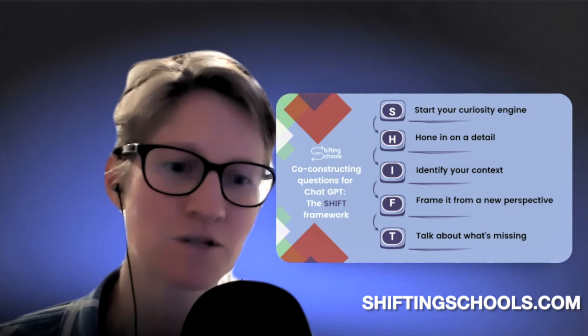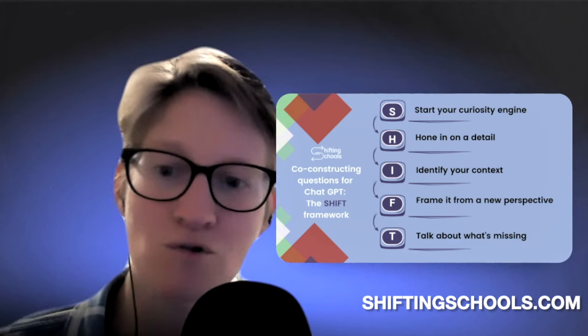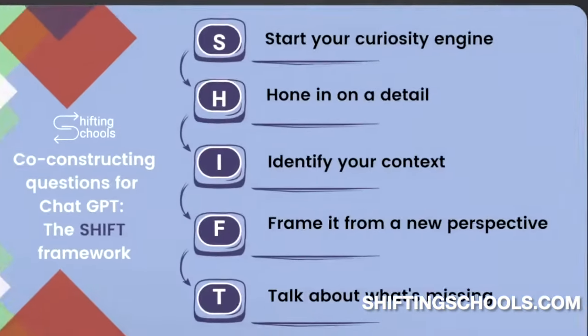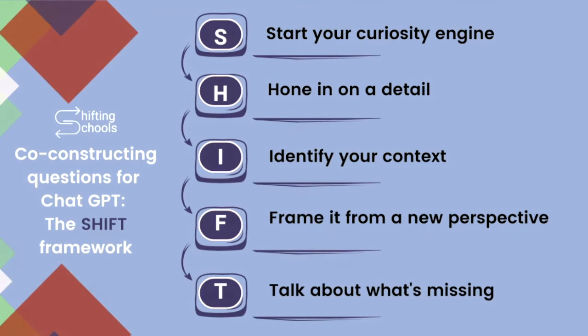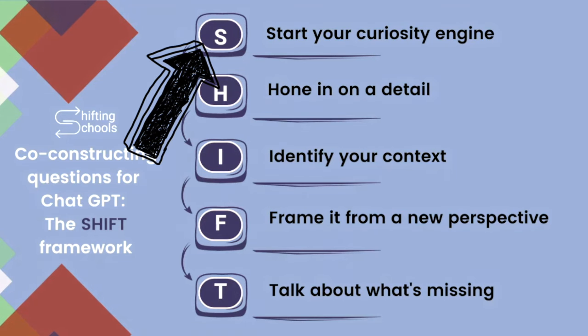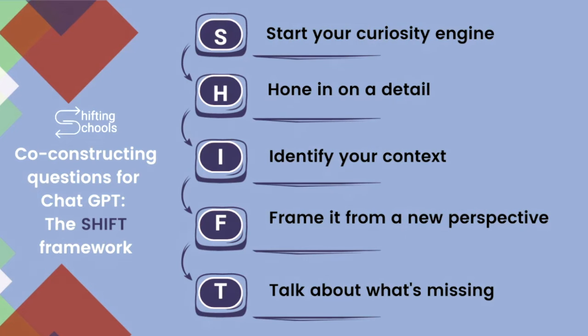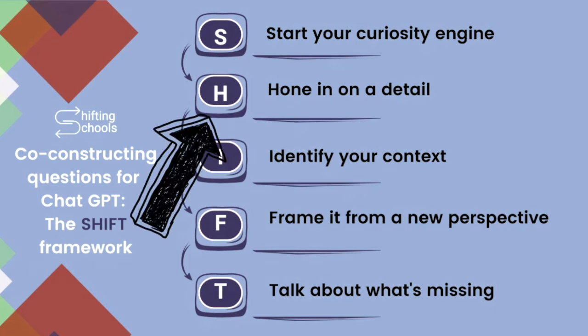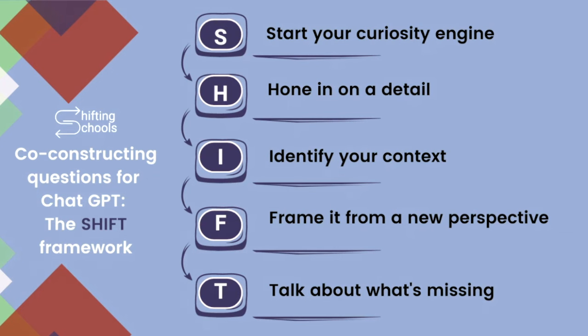We're going to model this process for you and take you through our Shift Framework. The Shift Framework essentially asks a learning community to start their curiosity engine to get that prompt started, to hone in on a detail. Remember, the power of a tool like ChatGPT is that you can refine that prompt — you can keep building into that prompt to really get ChatGPT to follow your trail of inquiry towards the place you need it to get.